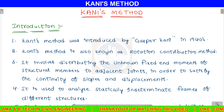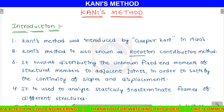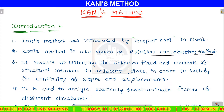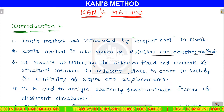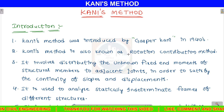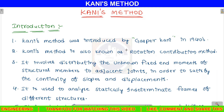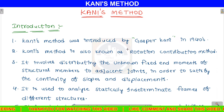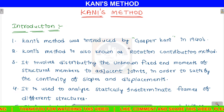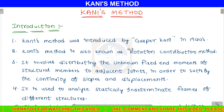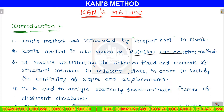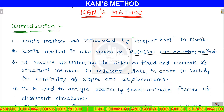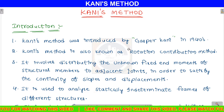Kani's method is also known as the rotation contribution method. While analyzing a structure, we distribute the rotation contribution at joints.